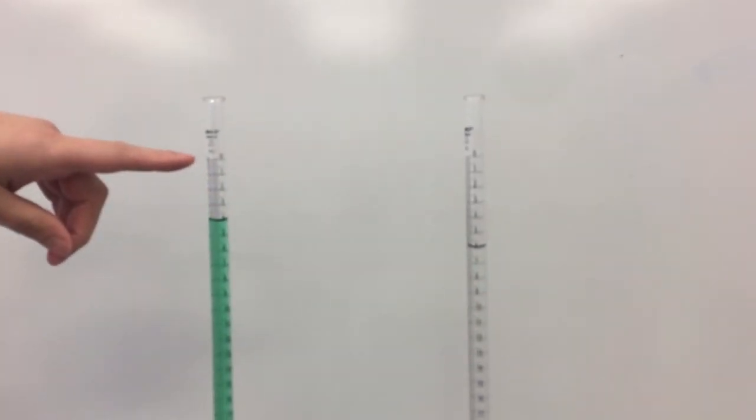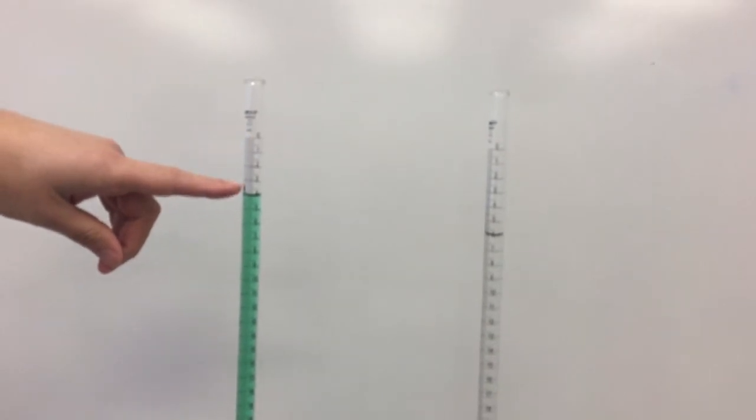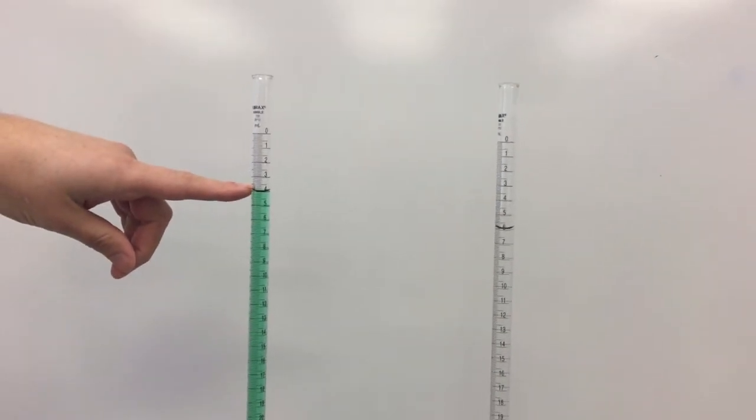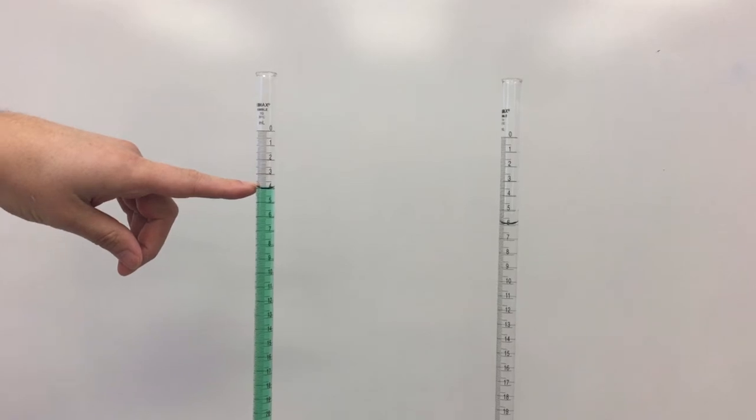When using a burette to make dilutions, first take note of the initial reading of the burette. The initial reading does not have to be at 0, but it does have to be below the 0 mark so that you can get an accurate measure.